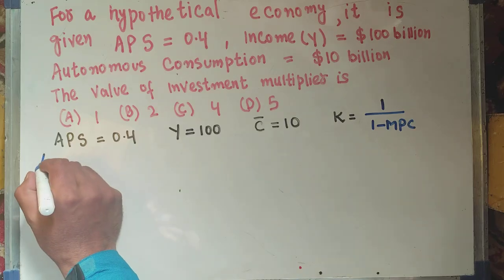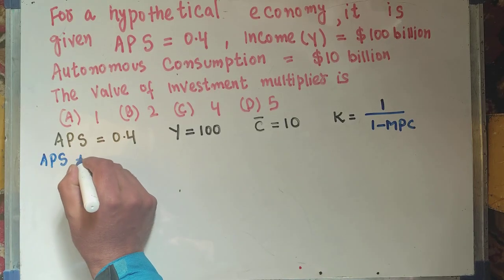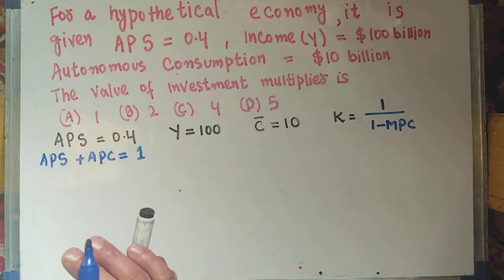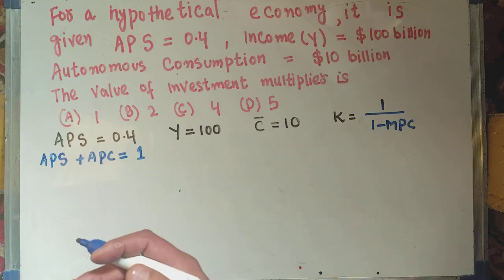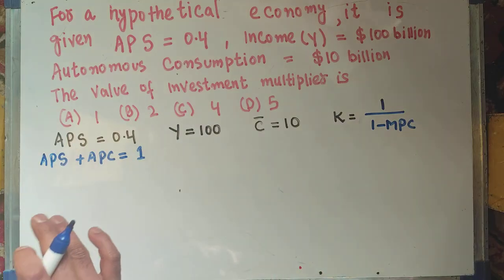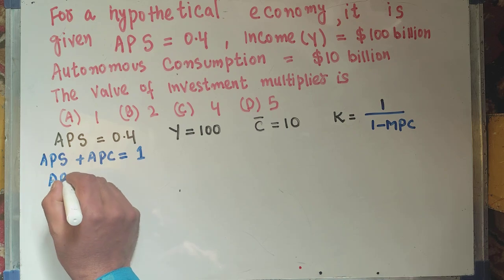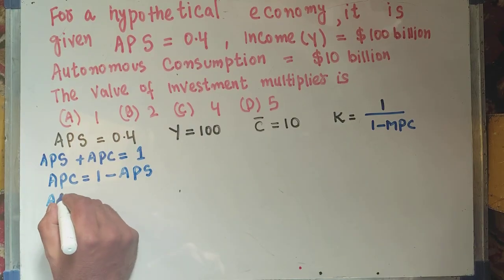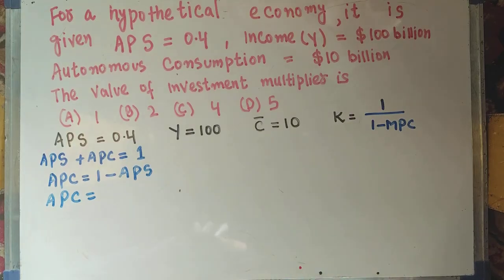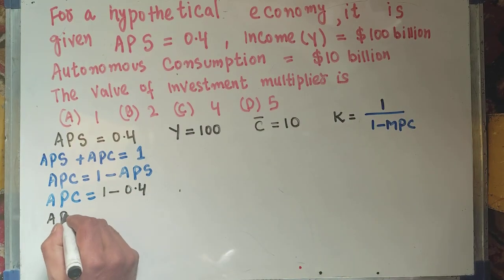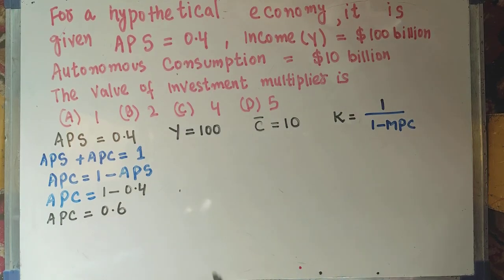We know that APS (average propensity to save) plus APC (average propensity to consume) is equal to 1. By average propensity to consume, we mean it shows us the proportion of income that is spent on goods and services rather than saved. From that we can find out the value of APC: APC = 1 minus APS = 1 minus 0.4 = 0.6.